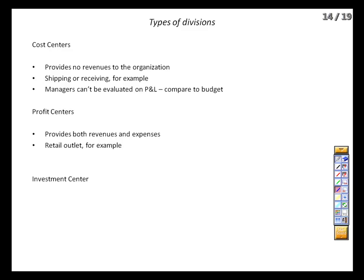Even though they've got a profit and loss, we still need to be careful about how we use that information. Remember that controllable versus non-controllable distinction from Chapter 11? Even though the division is a profit center, it doesn't mean it controls everything. It may be stuck with internal transfer prices, or saddled with overhead pushed down on it from corporate headquarters, or product prices set by headquarters' buying department. For this type of division, we should be looking carefully at creating a reasonable budget and then comparing performance to that budget.